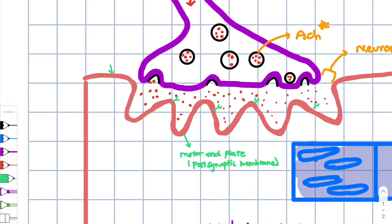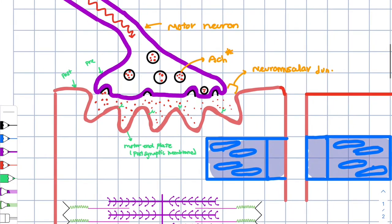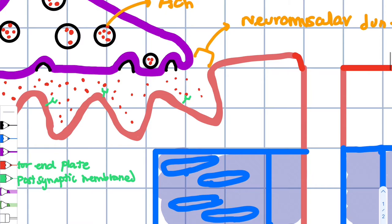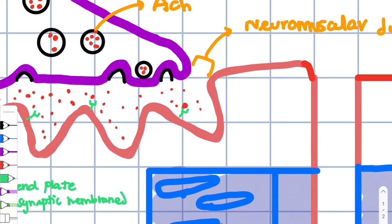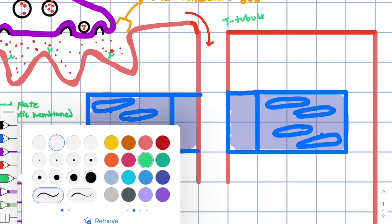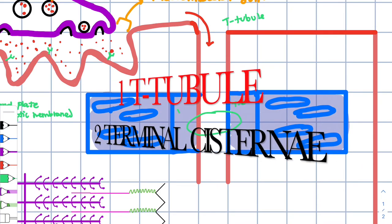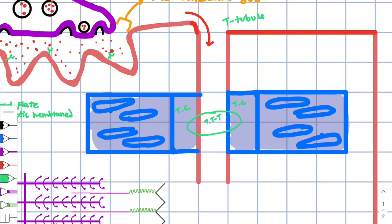Your motor end plate is your post-synaptic membrane — post means after. Your pre-synaptic membrane is part of your neuron, while the post-synaptic membrane is the motor end plate of the sarcolemma of that muscle fiber. Once the neurotransmitter binds with the specific receptor at the motor end plate, the action potential then travels down the T-tubule. The action potential travels down the T-tubule and gets to a region called the triad, which is composed of two terminal cisternae and one T-tubule.